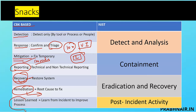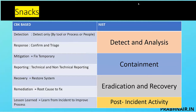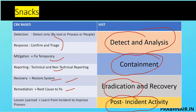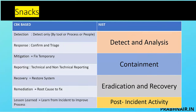Then we do remediation — understanding how the ransomware attacked the server to ensure it doesn't happen again. This is where we involve the problem management team. Last is lesson learned: what lessons did we learn from this incident to improve the incident response process? In NIST terms: detection and analysis is a combination of detection and response; containment covers mitigation, reporting, and restoring; eradication combines recovery and remediation; and finally post-incident activity covers lesson learned.